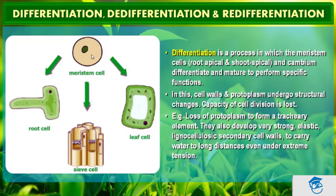The meristem cells keep on dividing, contributing to plant growth and development. Meristem cells are present in the leaf cell and root cell — they are also present in the root apex. During differentiation, cells undergo few to major structural changes both in their cell wall and protoplasm.